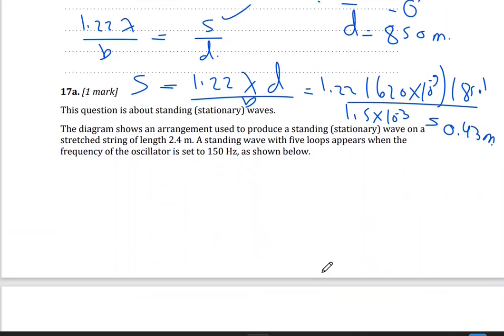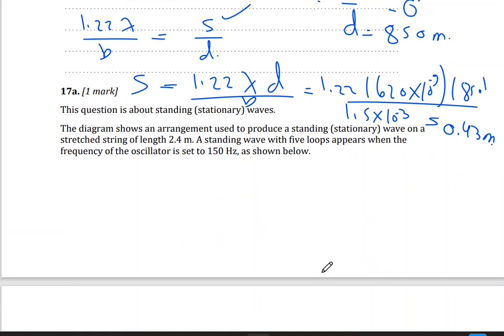Okay. Second question is on standing waves. So here you have a diagram that shows an arrangement used to produce standing or stationary waves on a stretch string that has a length of 2.4, so L is 2.4 meter. Standing wave of 5 loops, so n, I have 5, 5 loops which means I have 5 antinodes, appear when the frequency of the oscillator, so I have f is 150 hertz.